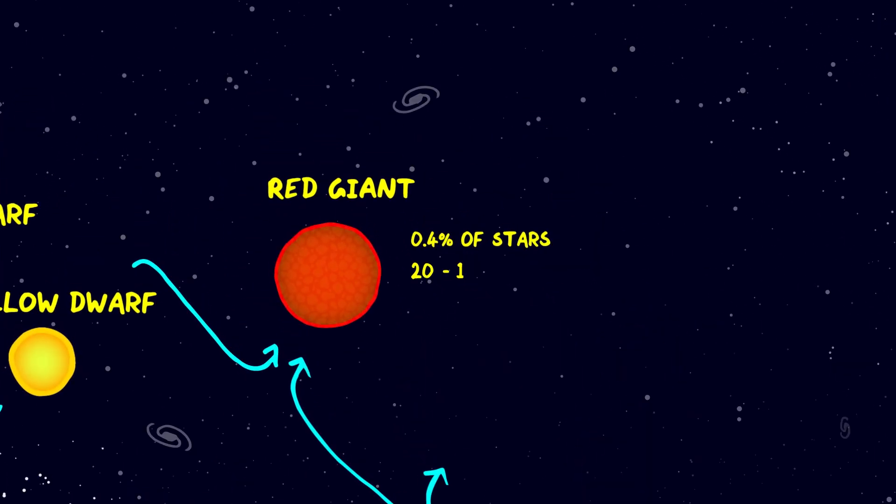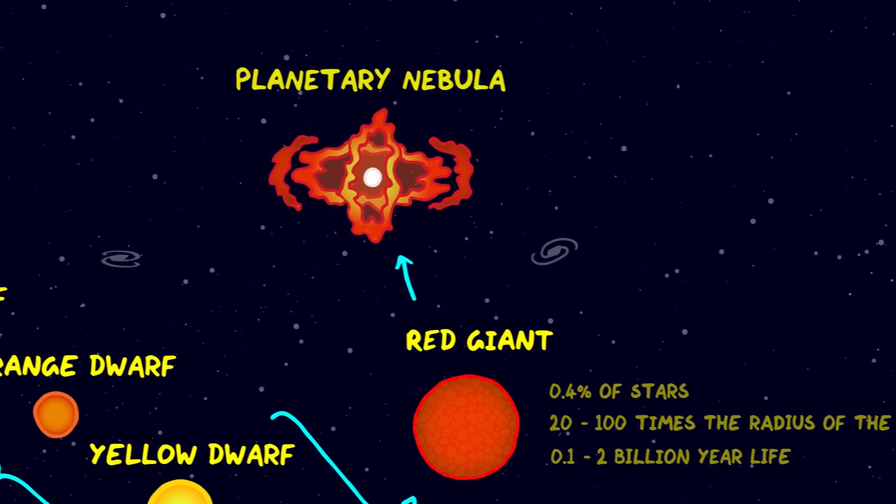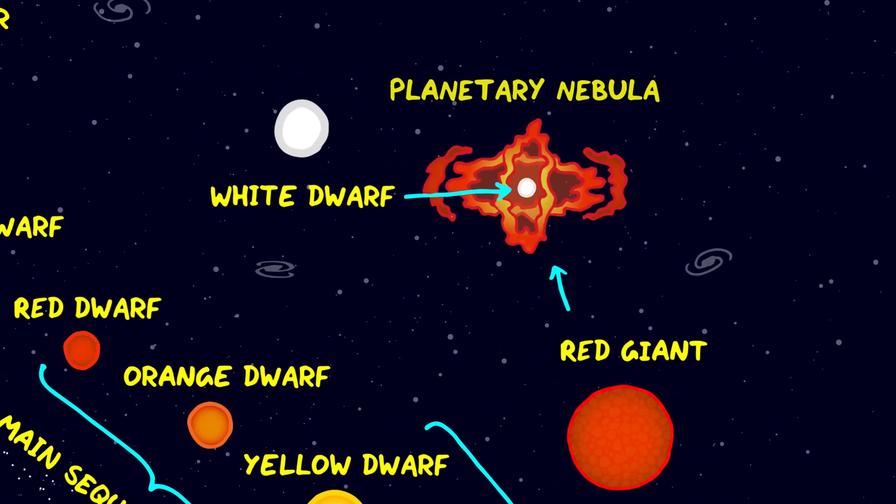Red giant stars have a radius of 20 to 100 times the radius of the Sun and burn for a few hundred million to 2 billion years before exploding to make a planetary nebula, with their cores shrinking into a white dwarf star. A white dwarf star is also the final destination for orange and red dwarf stars. White dwarf stars make up 4% of the stars in the galaxy and are tiny and dense, roughly the mass of the Sun squeezed into the size of the Earth.